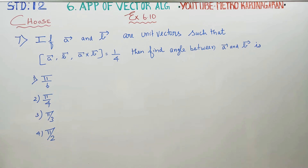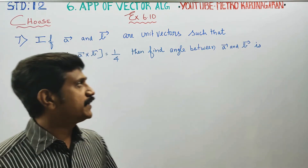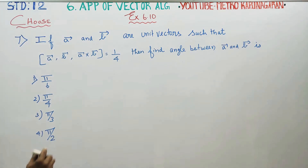Dear 12th standard students, in Exercise 6.10, problem number 7, find the angle between vector a and vector b.